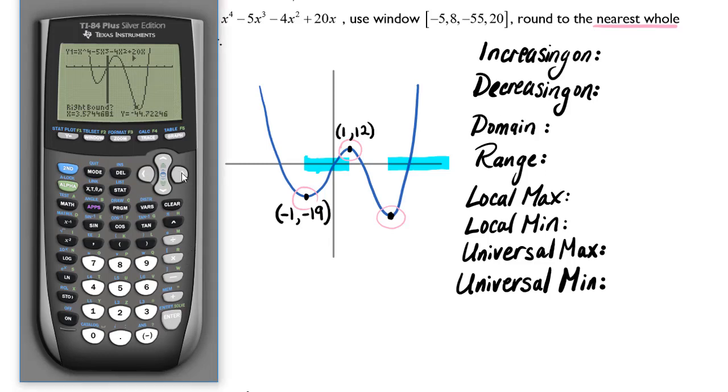Now it wants me to find a right bound. Arrow to the right of the minimum. Hit enter again. Now guess. That's about where I would expect it to be. Hit enter one last time. And my minimum is at 3.935 and negative 48.12. If I round these to the nearest whole number, my universal minimum will be at 4, negative 48.